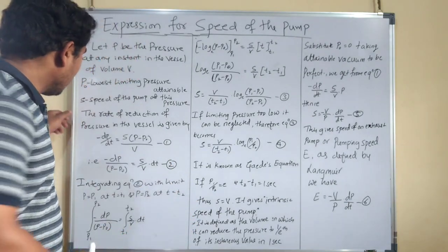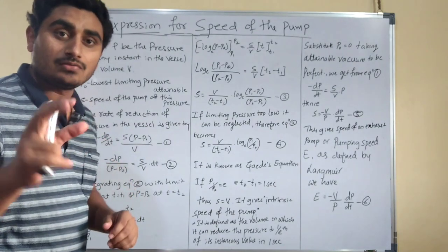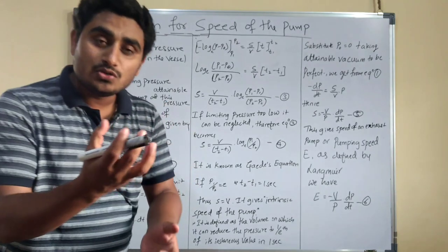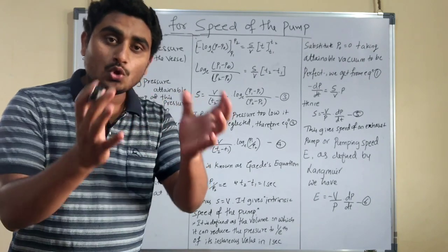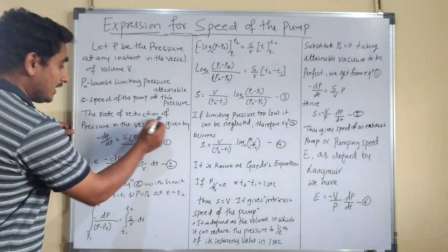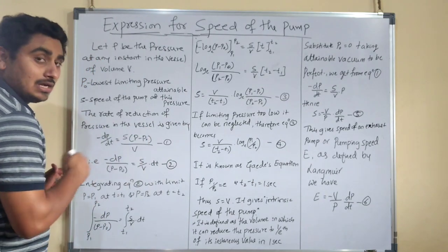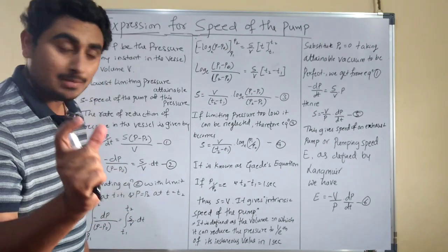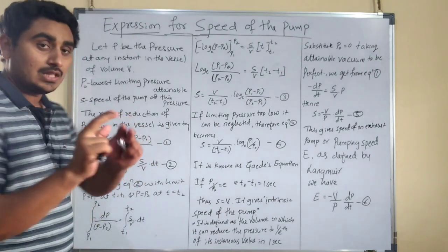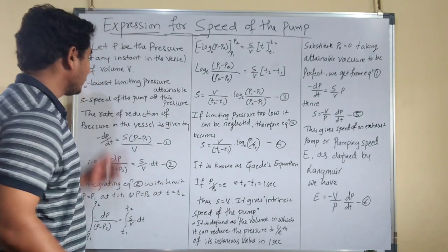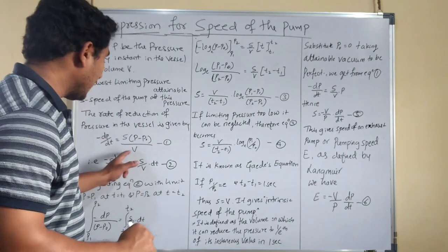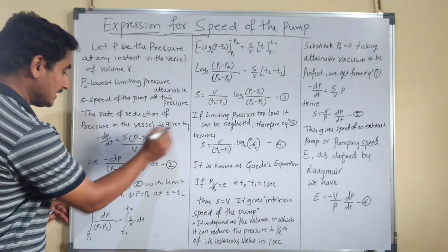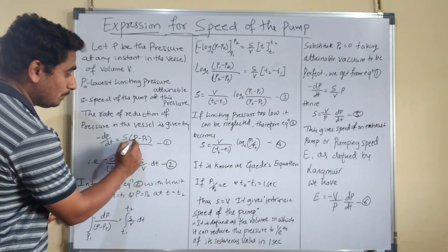The rate of reduction of the pressure in the vessel is given by minus dP divided by dt, where S is the speed of the pump, P is the pressure in the vessel at any instant, P0 is the lowest limiting pressure attainable, and V is the volume of the vessel. So the rate of reduction of pressure is: minus dP/dt = S(P − P0) / V. This is equation number 1.